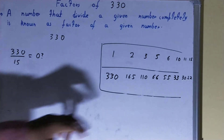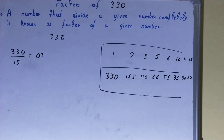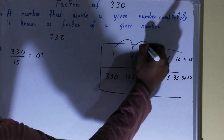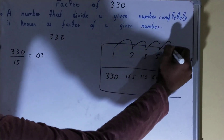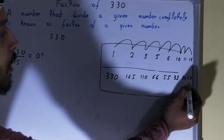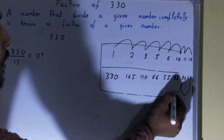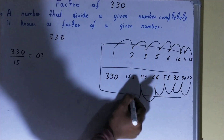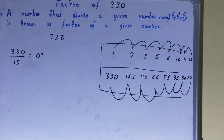After 15, if you check till 22 you will not get any more factors, so your work is done. The set of factors for the number 330 will be: 1, 2, 3, 5, 6, 10, 11, 15, 22, 30, 33, 55, 66, 110, 165, and 330. So this was all about factors of the number 330.